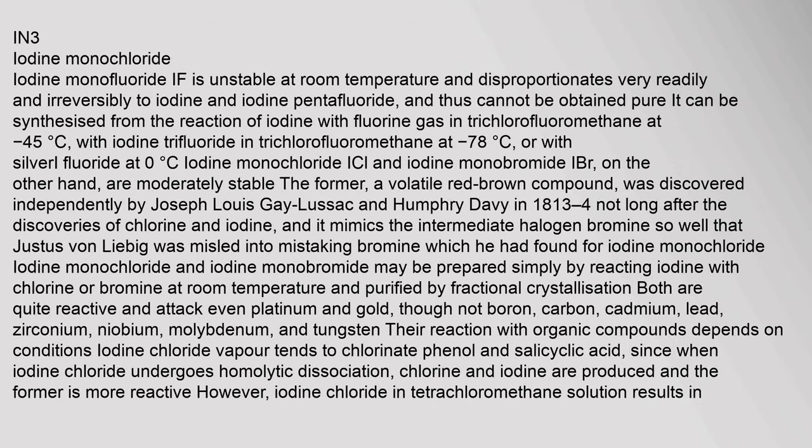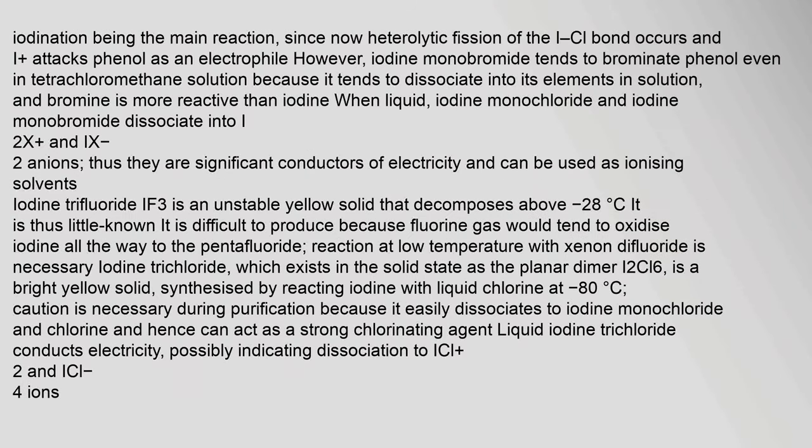Numerous cationic and anionic derivatives of interhalogen compounds are also characterized. Iodine monofluoride (IF) is unstable at room temperature and disproportionates very readily and irreversibly to iodine and iodine pentafluoride, and thus cannot be obtained pure. Iodine trifluoride (IF₃) is an unstable yellow solid that decomposes above −28°C. When liquid iodine monochloride and iodine monobromide dissociate, they are significant conductors of electricity and can be used as ionizing solvents.